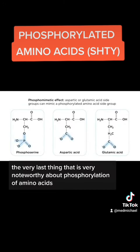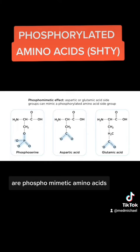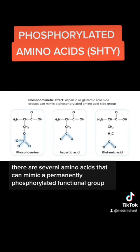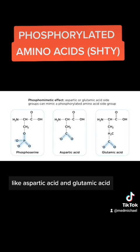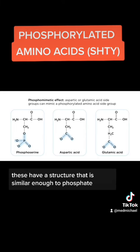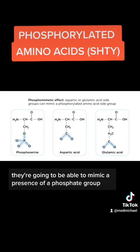The very last thing that is very noteworthy about phosphorylation of amino acids are phosphomimetic amino acids. What are these amino acids? There are several amino acids that can mimic a permanently phosphorylated functional group. Your amino acids that are acidic and negatively charged — like aspartic acid and glutamic acid — have a structure that is similar enough to phosphate that when you substitute them for amino acids like serine, threonine, or tyrosine, they're going to be able to mimic the presence of a phosphate group.